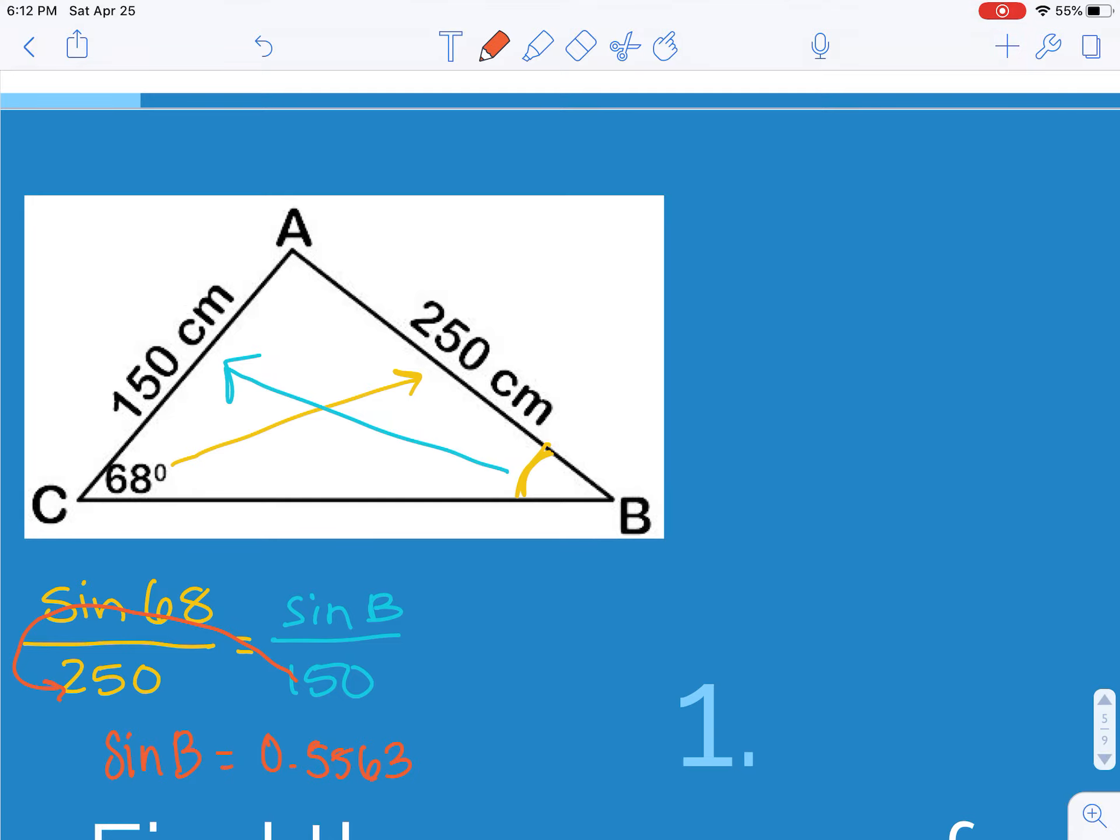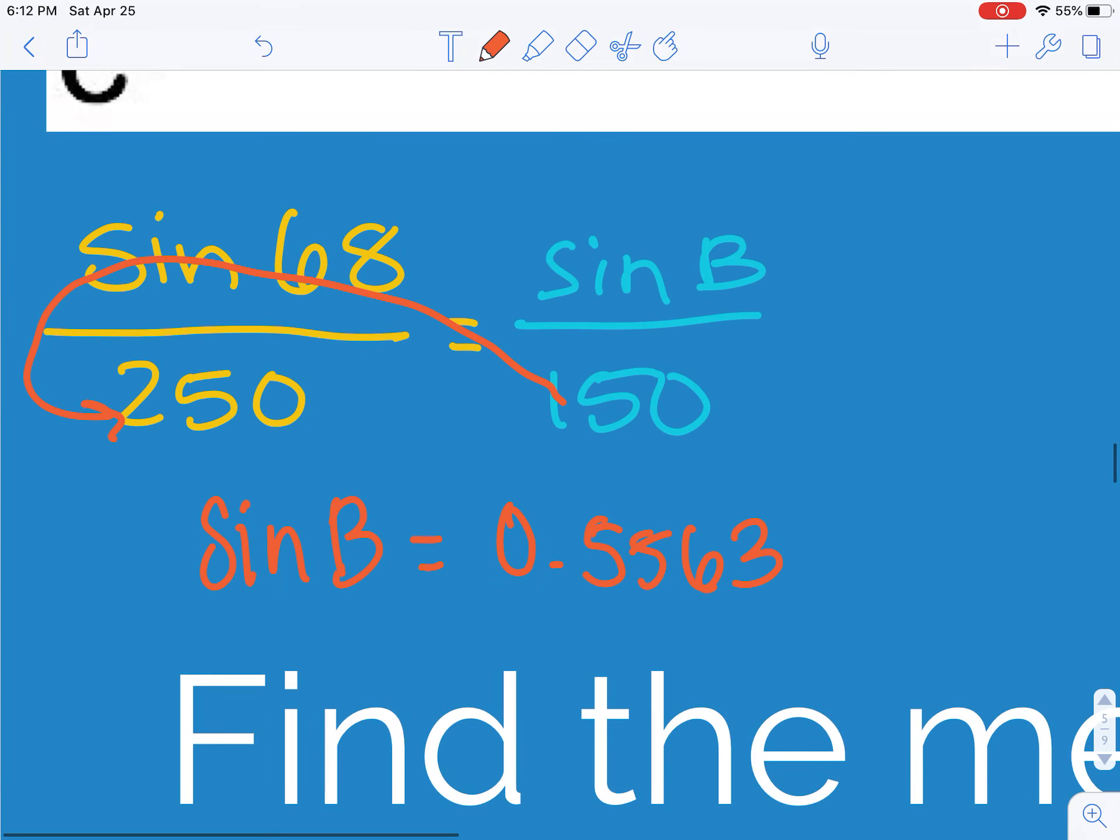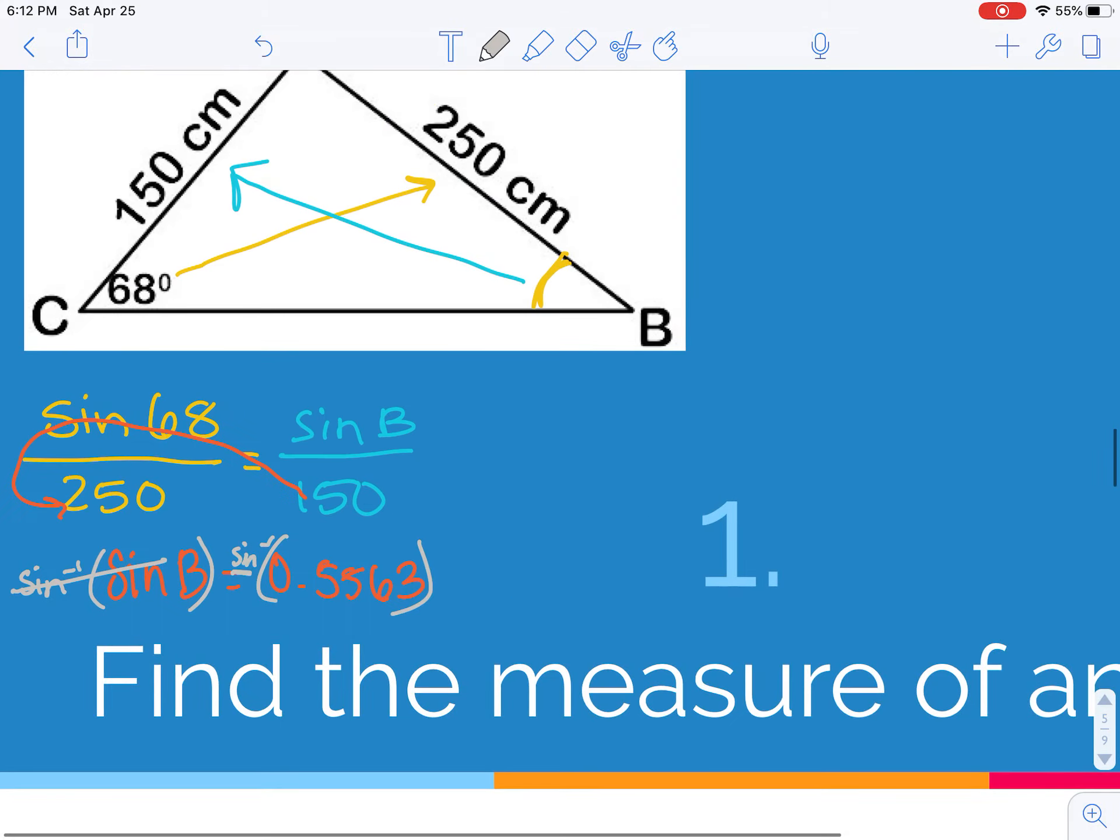To undo sine but leave B, I need to do the inverse sine. This will cancel out. There's nothing over here for this to cancel out. So now B equals inverse sine of 0.5563, and you get B is approximately 33.8 degrees.